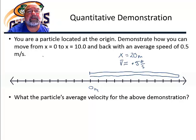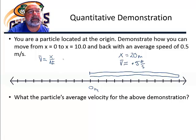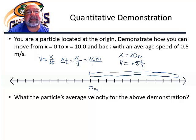Going back to the formula: average speed is equal to distance over the time interval. I want to know how long it takes, so I'm going to solve for delta t. Delta t, the time interval, is equal to the distance traveled over the average velocity. Substituting in, that is 20 meters at an average velocity of 0.5 meters per second, which gives us an elapsed time of 40 seconds. Our total trip will take 40 seconds.